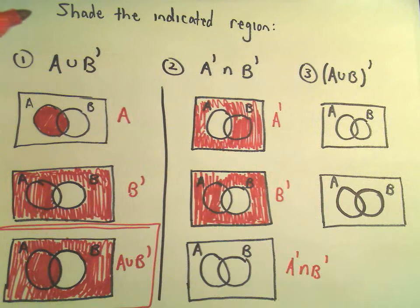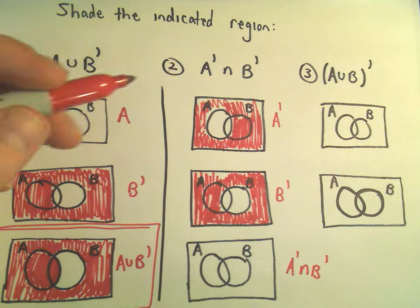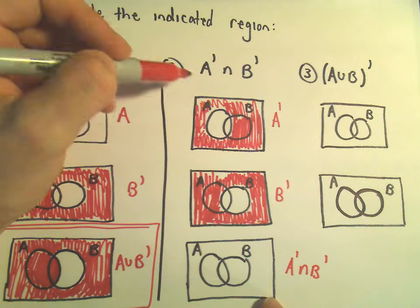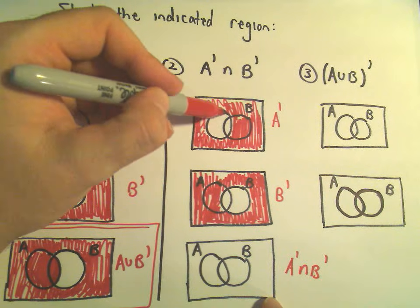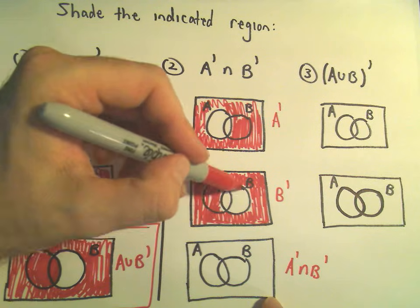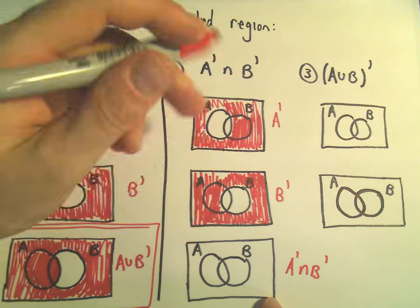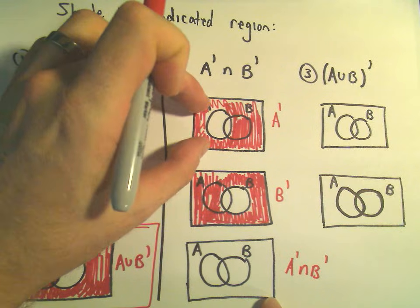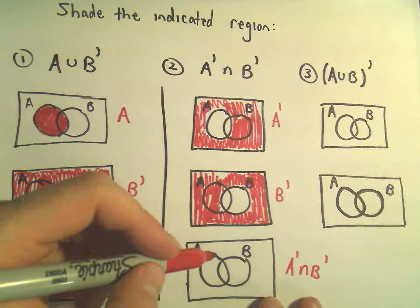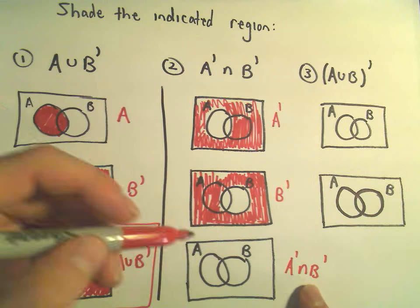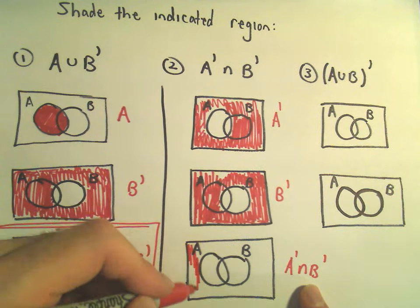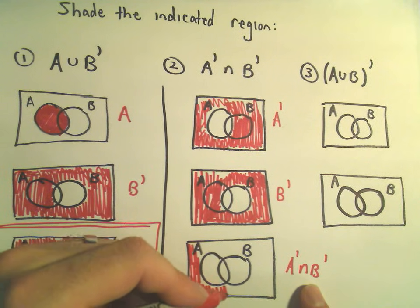So notice in my first picture, we basically left out circle A. In our second one, we left out circle B. But in both of them, we shaded the stuff outside of the circles. So if we shade NOT A AND NOT B, we're just going to get the region that's outside of both circles.